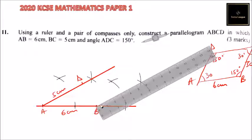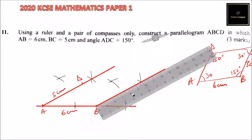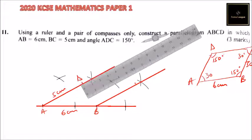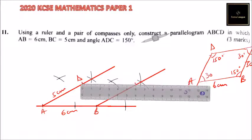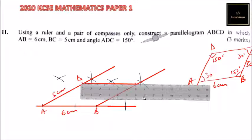That's an angle of 30 degrees. At the same time, we can measure 5 cm — 1, 2, 3, 4, 5 — so this is where we have our mark. We can simply join these two points and come up with our diagram. You just join those two points and that is our diagram.